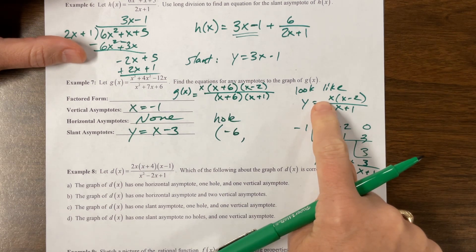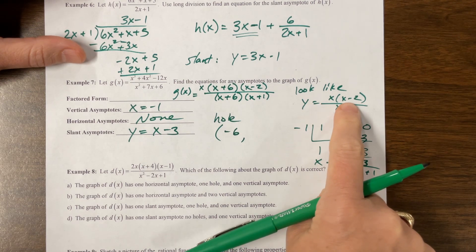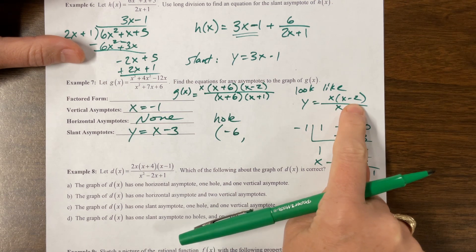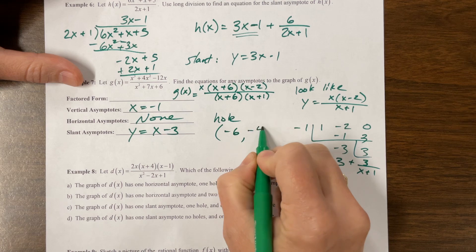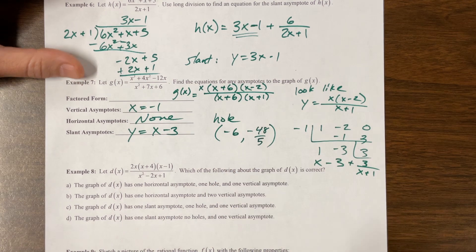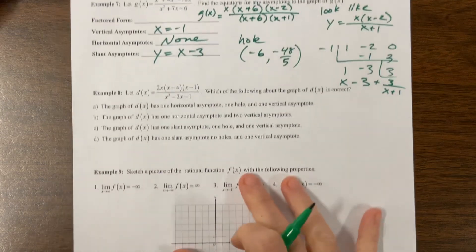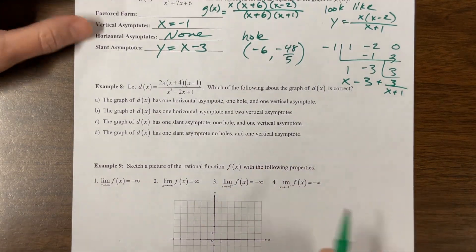When I plug that back in, negative 6 times negative 8, oh gross, is 48. Do I know any math over negative 5? So negative 48 over 5, I think. But if I was wrong, comment nicely down below and let me know. I don't care.